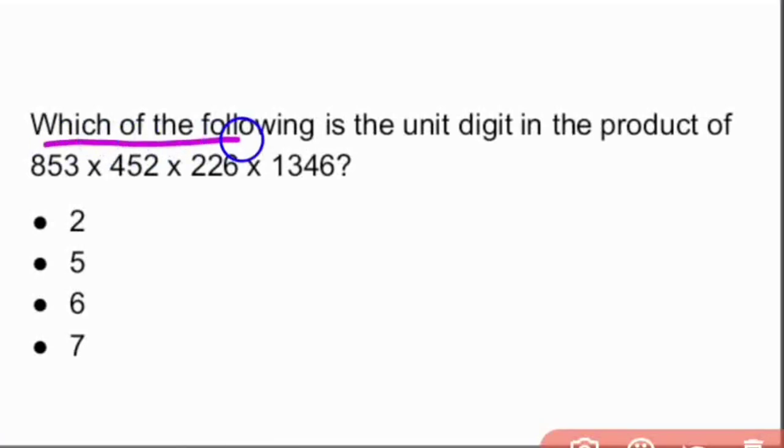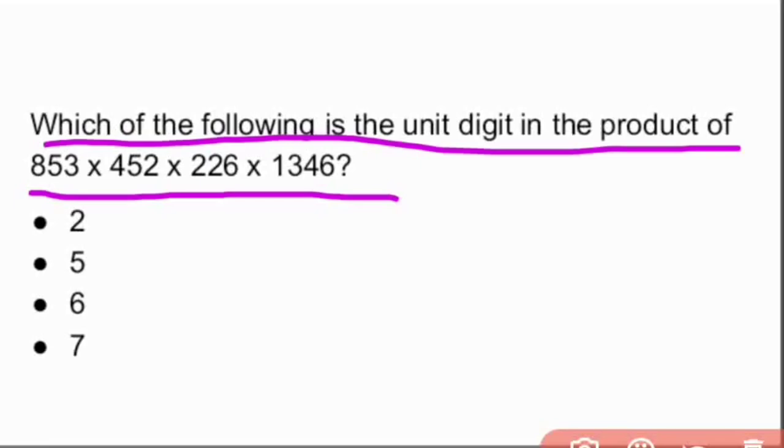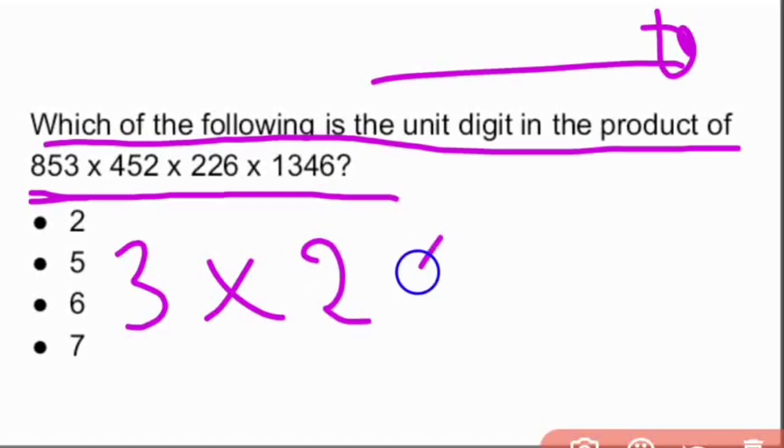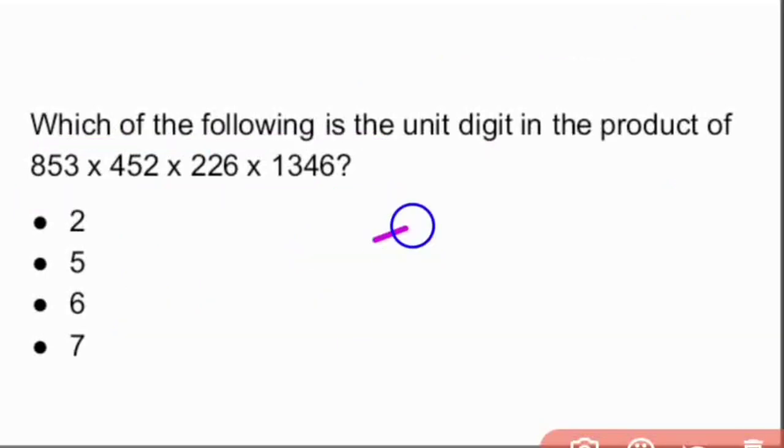Which of the following is the unit digit in the product of 853 × 452 × 226 × 1346? To find the unit digit, take the last digit of each number: 3 × 2 × 6 × 6. So 3 × 2 = 6, 6 × 6 = 36, 36 × 6... 36 × 6 and 6 × 6 = 36, that gives us 216.